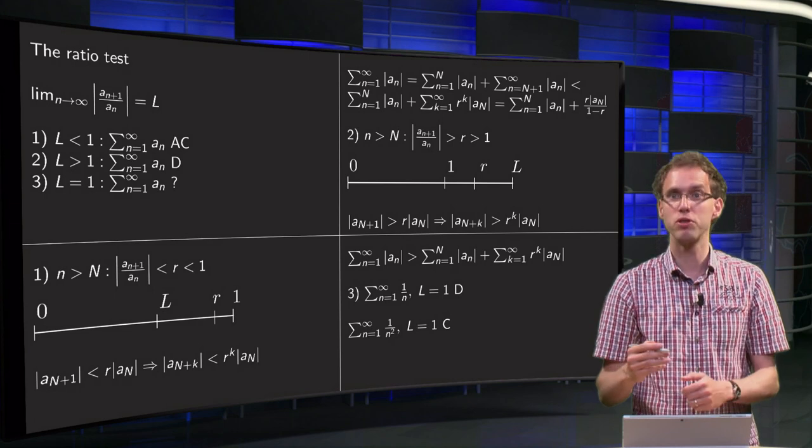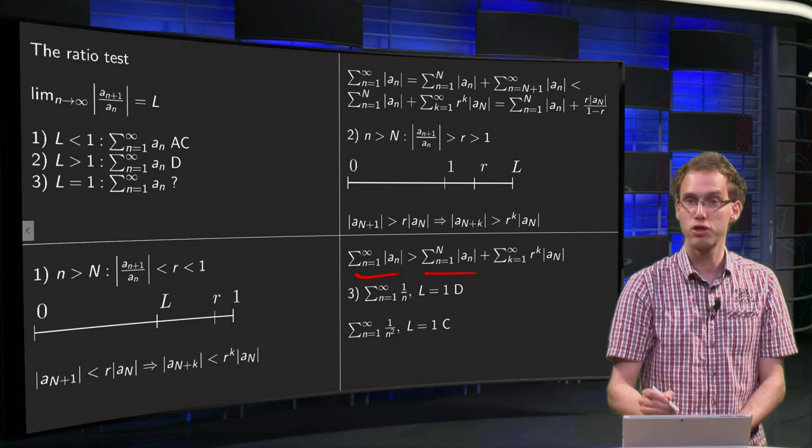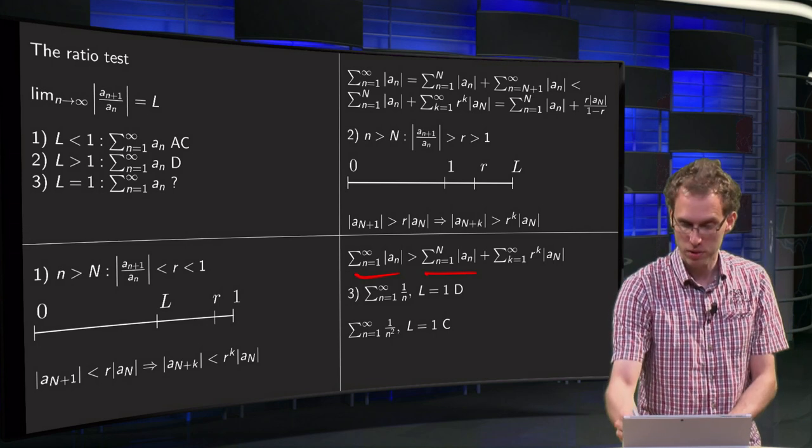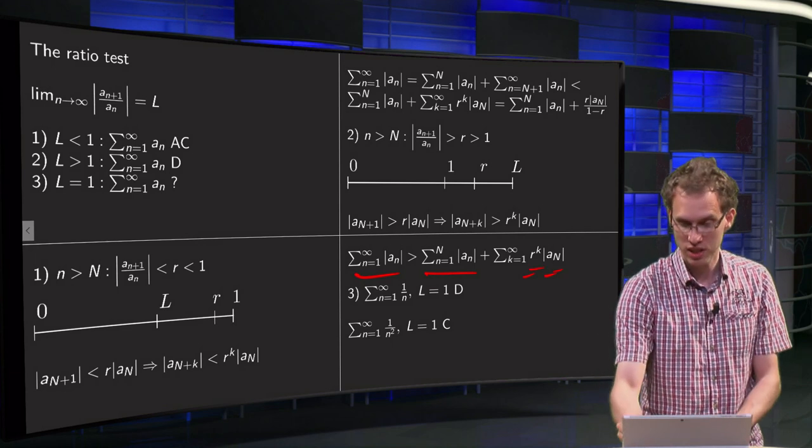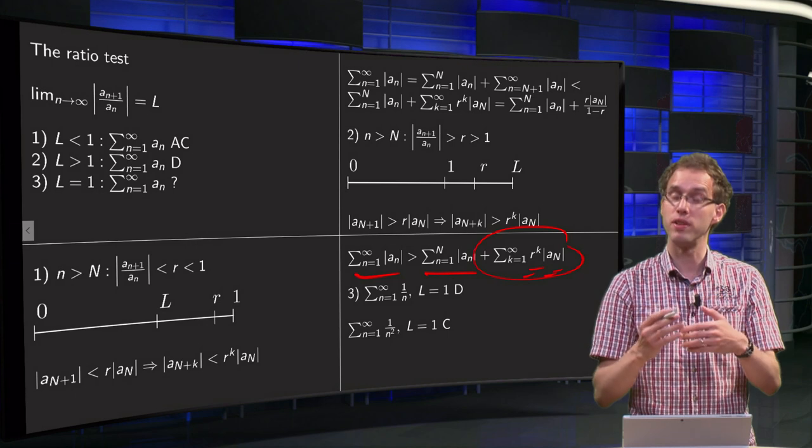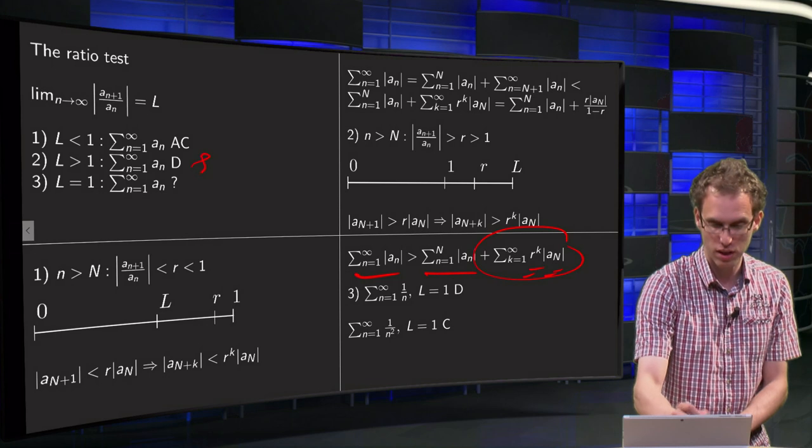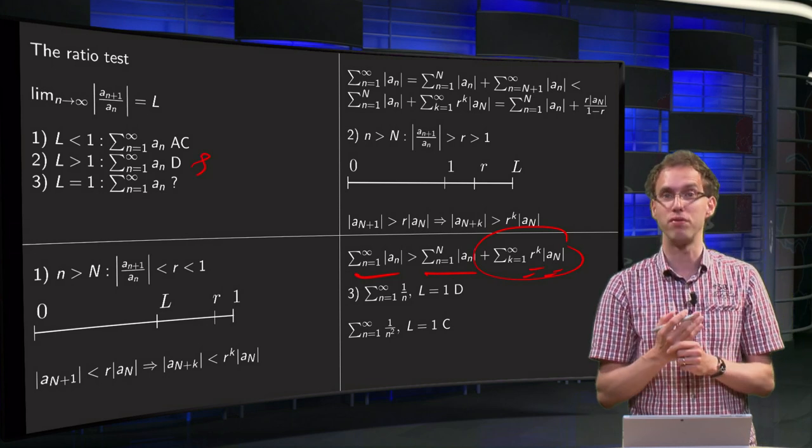So try to compute the sum exactly in the same way, sum n equals 1 to infinity a_n, sum of the first terms, and it is bigger than, now with the r to the k times a_n. But this second series, this geometric series with r bigger than 1, so it is divergent, so that is why this series here diverges, if L is bigger than 1, it is even bigger than the divergent series.